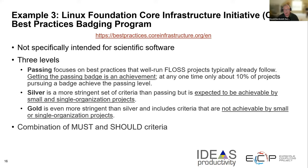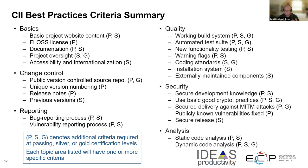The CII badging program defines three levels of capabilities with must and should criteria. They look at things like having a project website, a license, basic documentation, change control, bug reporting, and quality control. Security is also a consideration, which is coming up more and more in scientific computing — especially as we get into workflows and distributed computing. They also advocate for the use of static analysis, dynamic code analysis, and things like that.